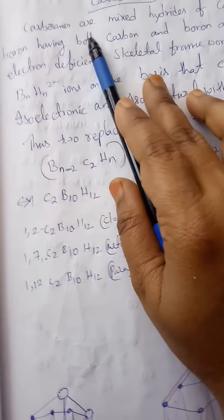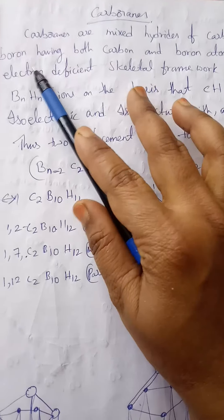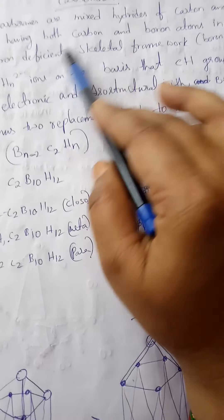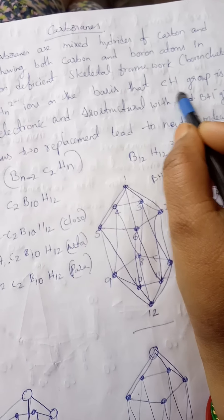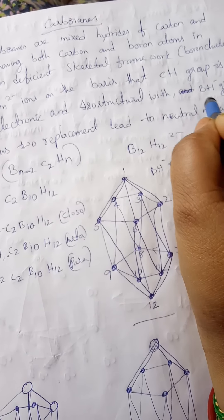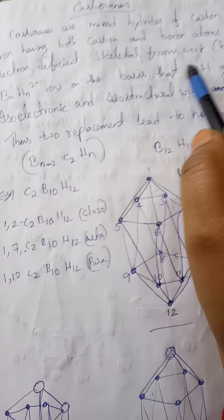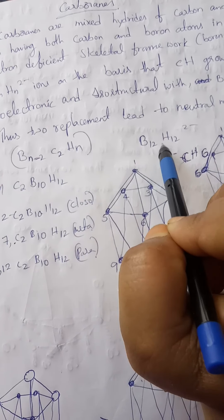The next one is carboranes. Carboranes are mixed hydrides of carbon and boron, having both carbon and boron atoms. In the previous class we discussed that the BH minus unit is isoelectronic with the CH unit. BH minus unit is isoelectronic and isolobal.